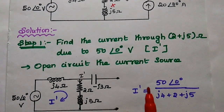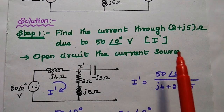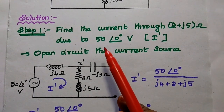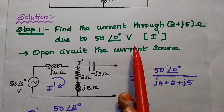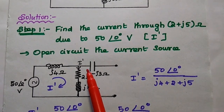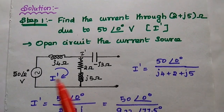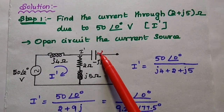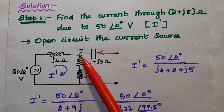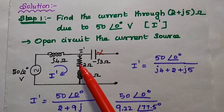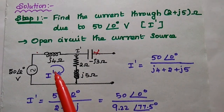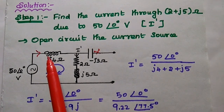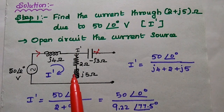In the solution, the first step is to find the current through 2+J5 Ohm due to the voltage source, which is 50∠0° volts — that current is I'. When we consider only the voltage source, the current source is open-circuited, so there is no current flowing through that branch. We consider this loop where all the elements are connected in series, and the total current is the same throughout the circuit.